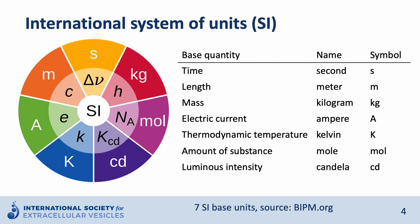Until 2019 these units were based on etalons. From 2019 these units are defined based on physical constants. For example, as I mentioned already, meter is defined based on the speed of light. Another example is the kilogram, which is defined based on Planck's constant.